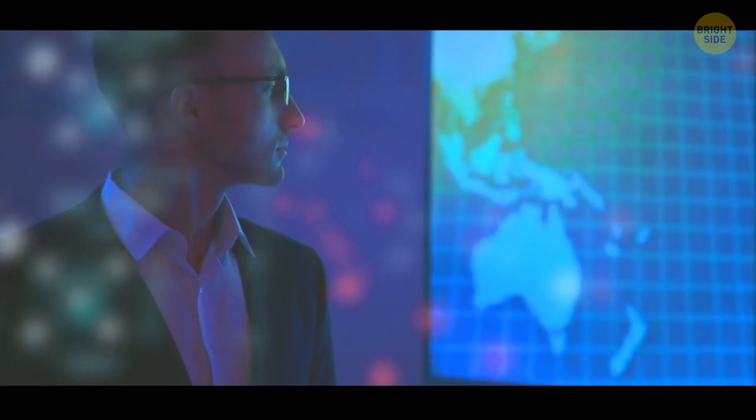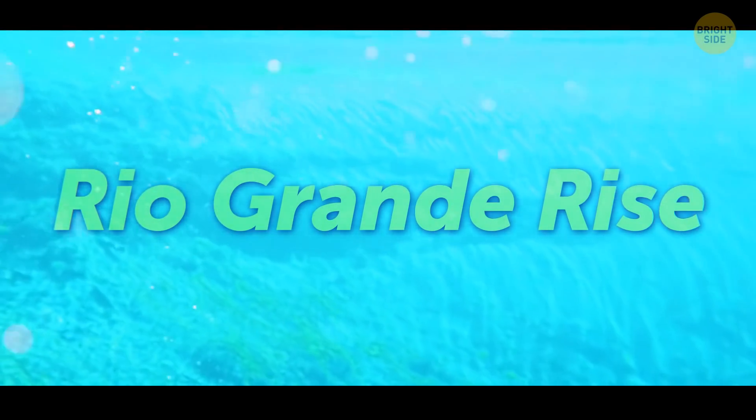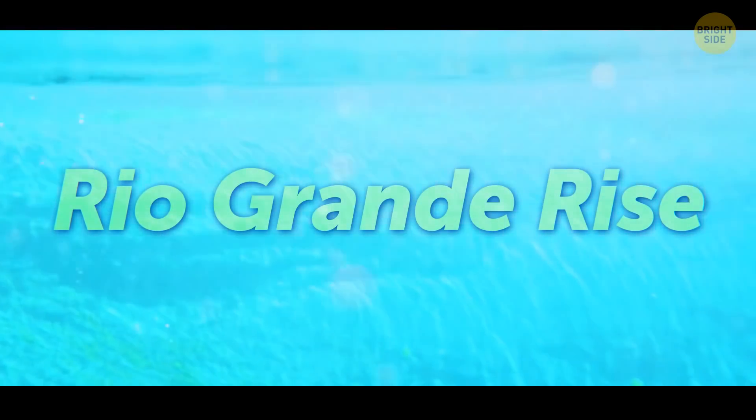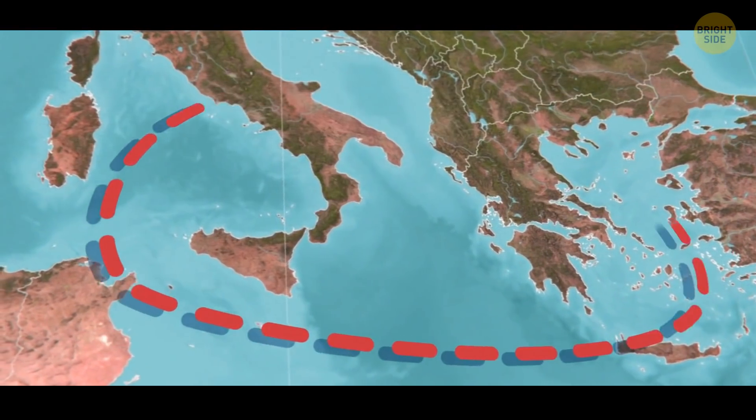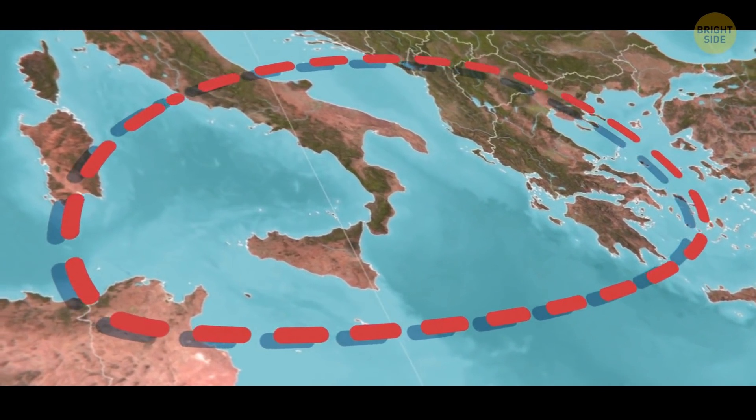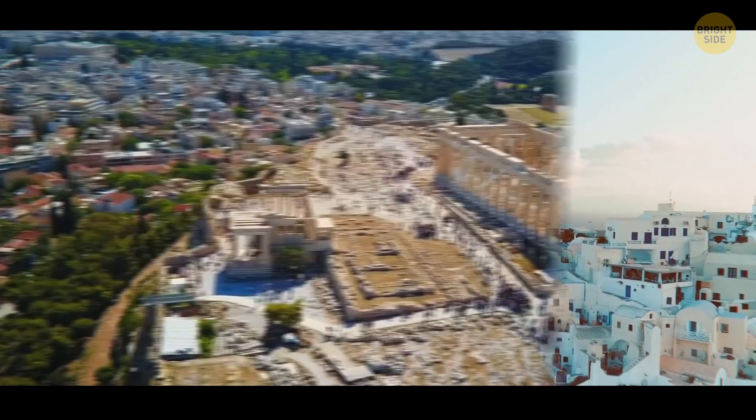Scientists are looking for them, and they've already found some. One of those lost continents is the Rio Grande Rise. It's a stretch of underwater seamounts that's been dubbed Brazil's Atlantis. Greater Adria lay somewhere between North Africa and Southern Eurasia. Hey, that's right around the Mediterranean Sea. And the Mediterranean is where Greece and Athens are.